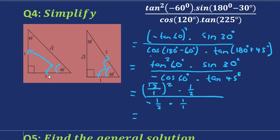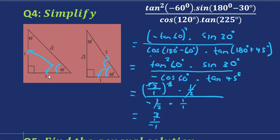Of course, the square will cancel out the square root, so we have 3. Put it over 1, and the two halves will cancel. So we have negative 1 in the denominator, which will simplify to negative 3.